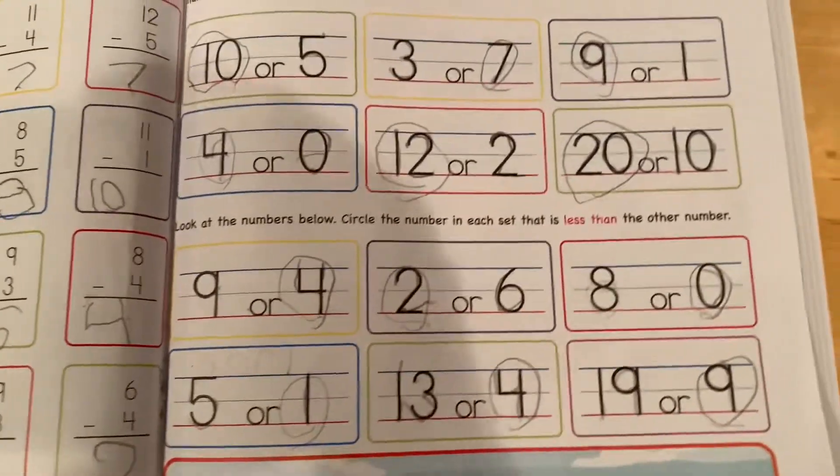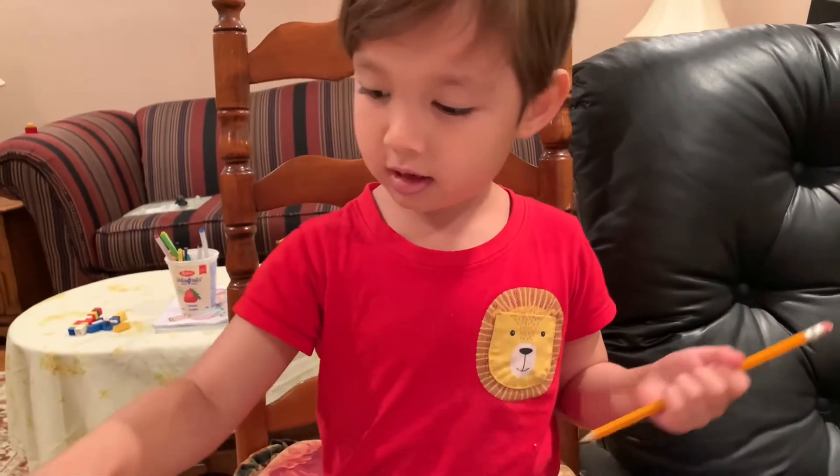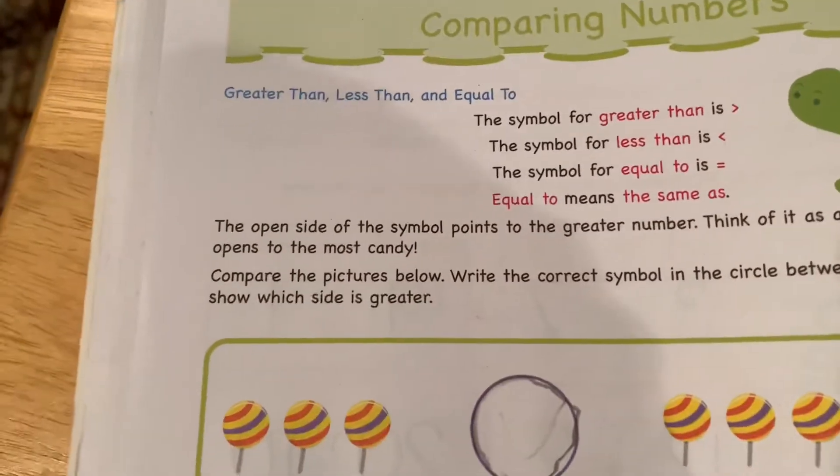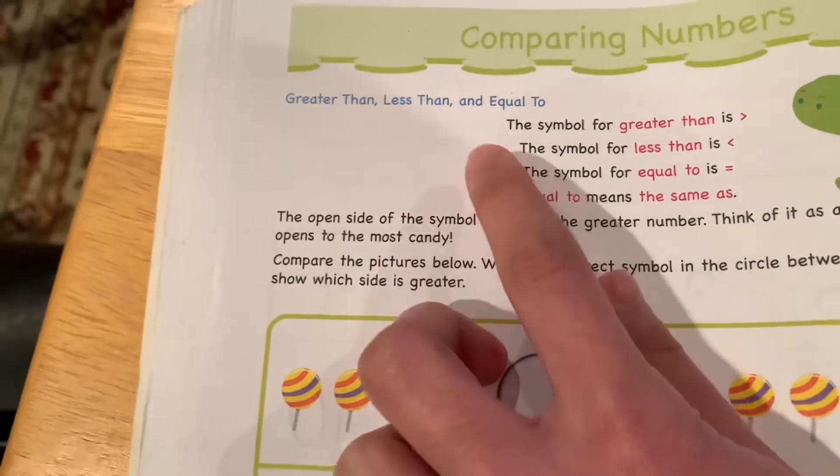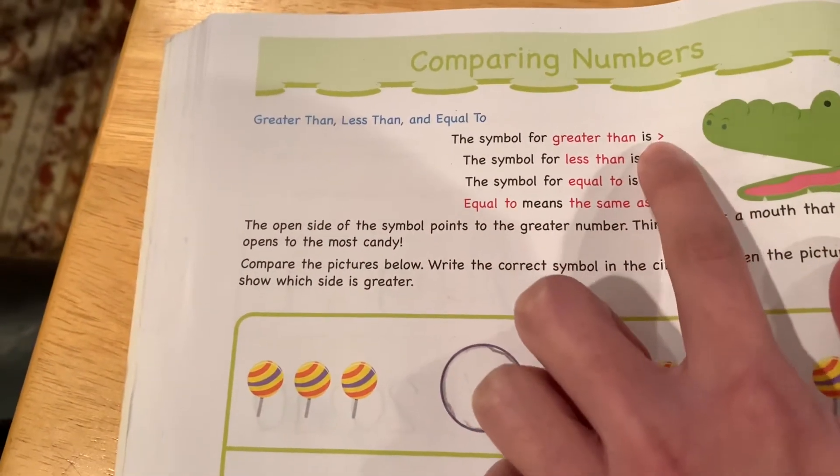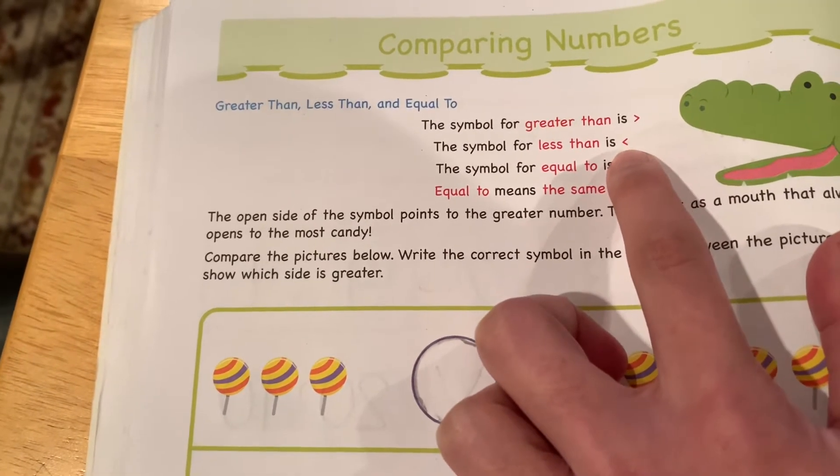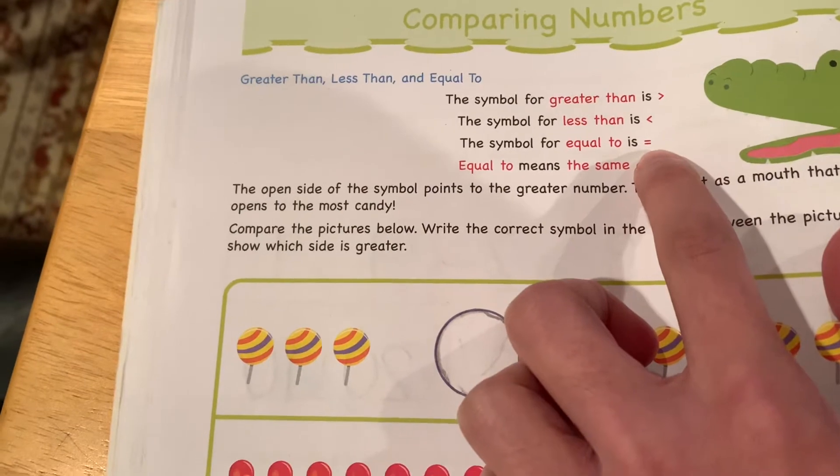Do you like comparing numbers? Yes. Let's choose the next page. Greater than, less than, and equal to. The symbol for greater than is this. And the symbol for less than is this one. The symbol for equal to is this.